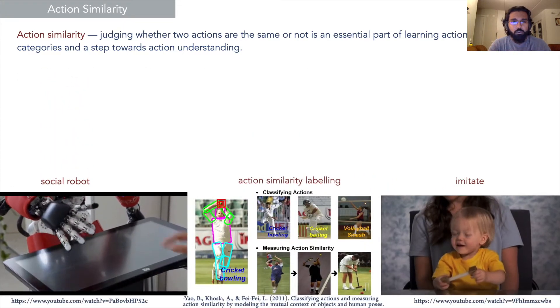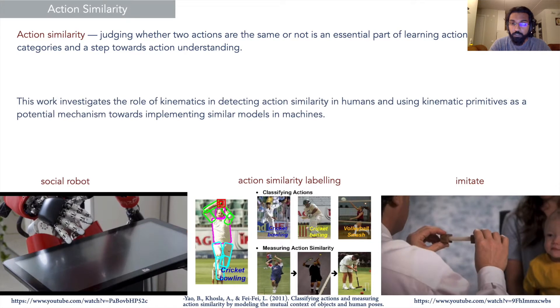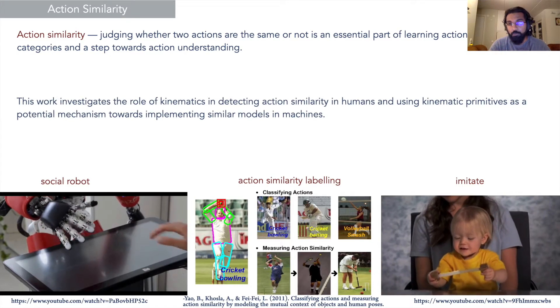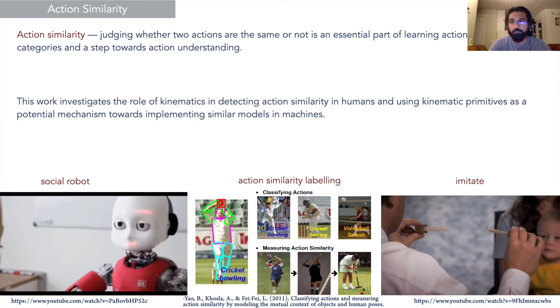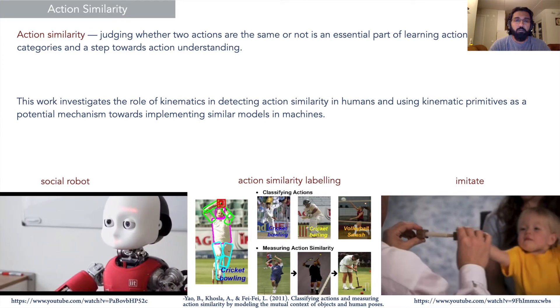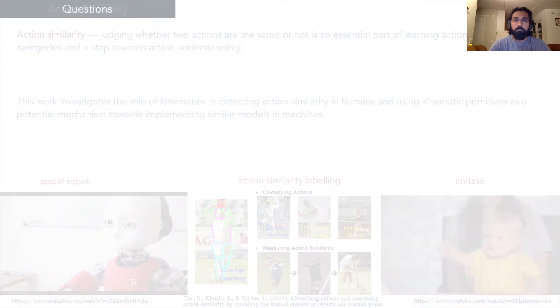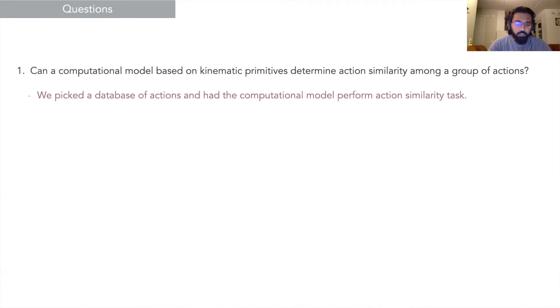This work investigates the role of kinematics in detecting action similarity in humans and using kinematic primitives as a potential mechanism for implementing similar models in machines. Our first question is: can a computational model based on kinematic primitives determine action similarity among a group of actions? For that, we picked a database of actions and had the computational model perform action similarity tasks on them.